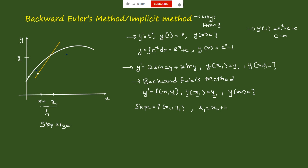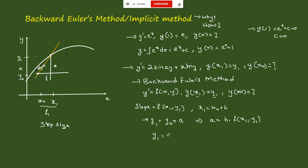Now we find the value of y0. We get an assumed value of y0 — there will be some distance between the function and the point. From the rectangle construction, the distance between y1 and y0 equals a, where a = h × slope = h · f(x1, y1). So y1 = y0 + a, which gives us y0.